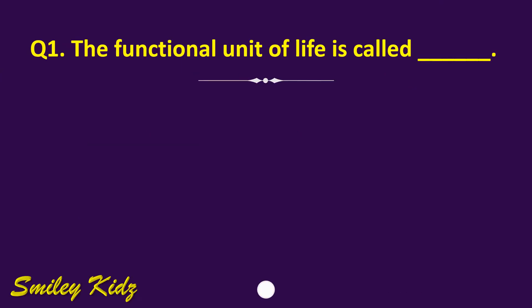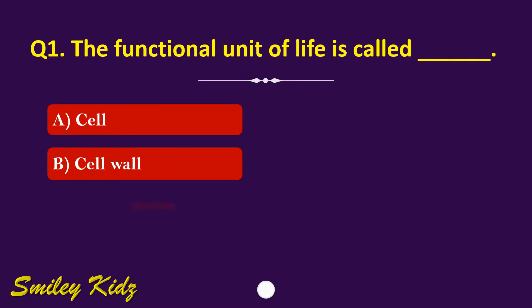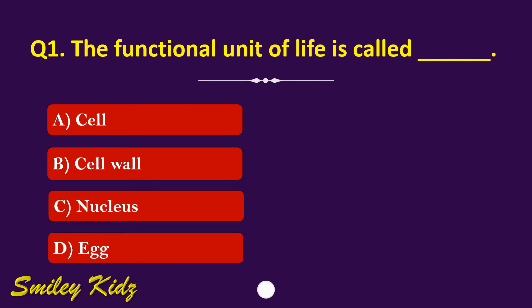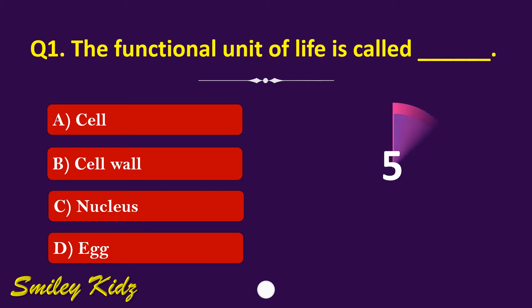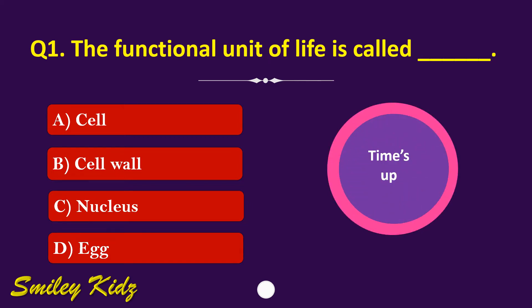Question number 1. The functional unit of life is called dash. The options are: A. Cell, B. Cell wall, C. Nucleus, or D. Egg. Your time starts now. Your time is up and the right answer is option A. Cell. The functional unit of life is called cell.